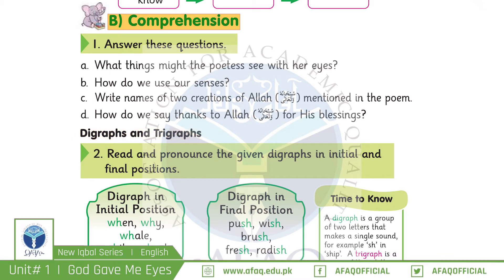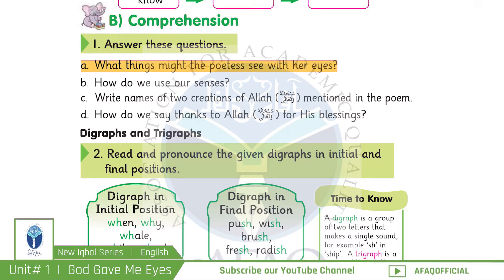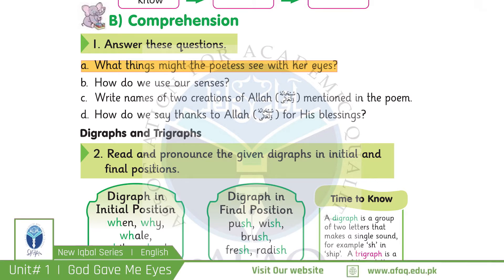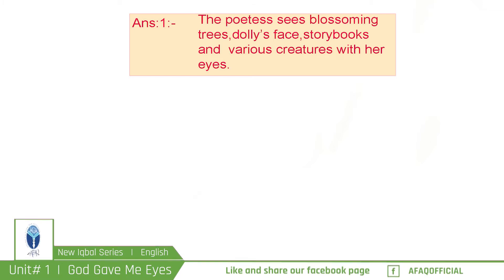Let's start our comprehension with question and answer. Answer these following questions. Question 1: What things might the poetess see with her eyes? Shayra अपनी आँखों से क्या देख सकती है? The poetess sees blossoming trees, dolly's face, storybooks and various creatures with her eyes.